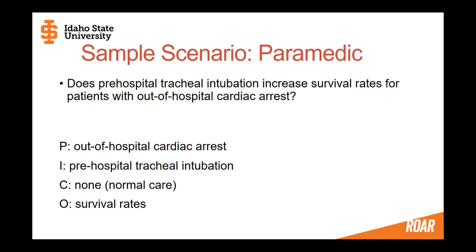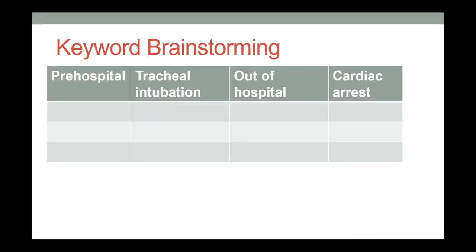I'm going to create a table with each concept in its own column. You'll notice I've separated pre-hospital and tracheal intubation, and I've put out-of-hospital and cardiac arrest separately. I haven't put survival rates, and that's often because when you're searching, the outcome is not always important to search for. If we're talking about pre-hospital tracheal intubation, naturally we're going to be interested in survival rates, so logically I don't have to include it. This is a judgment call based on intuition and best practice.